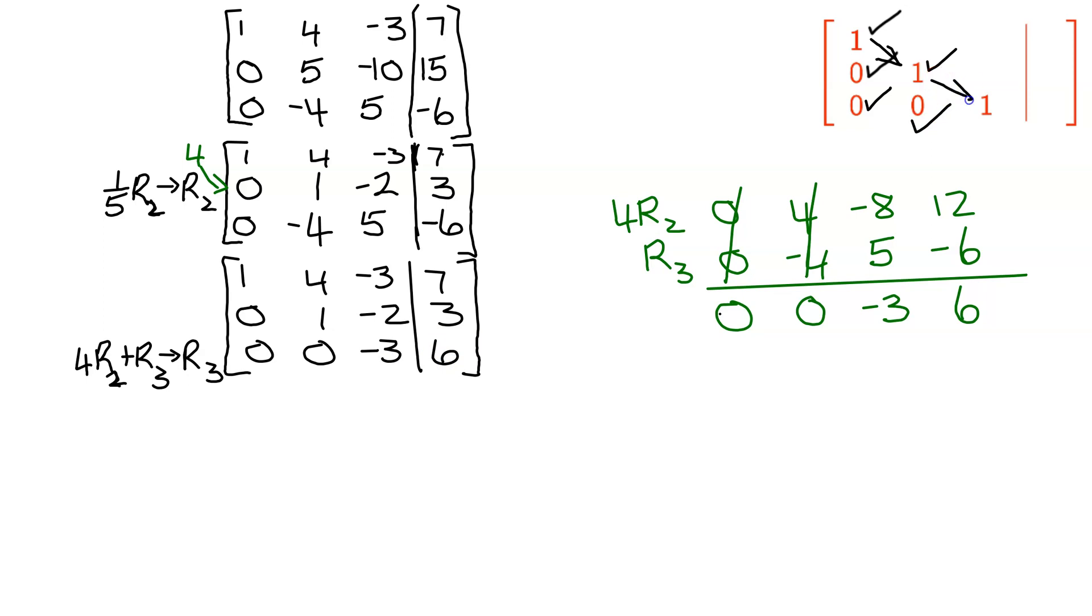The last thing I need to do is go down the leading diagonal and get a 1 in this position, where the negative 3 is. And when you're in the last row, the only way to get a 1 is to multiply this whole row by negative 1 third. So I'm going to do negative 1 third row 3, and put it in row 3.